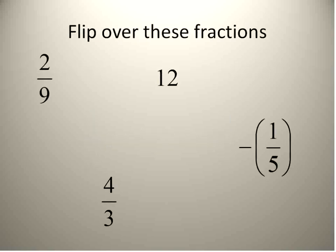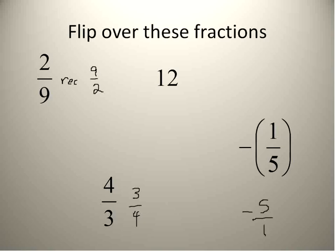Let's practice finding some reciprocals. We'll start with two over nine — the reciprocal is nine over two. Four over three would become three over four; that's the reciprocal. Negative one over five is negative five over one. Now this is a special case, because negative five over one — five divided by one is five — so instead of writing it as a fraction of five over one, we can just say negative five.